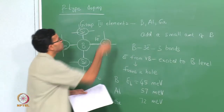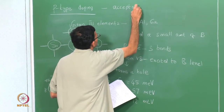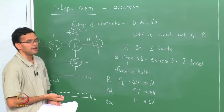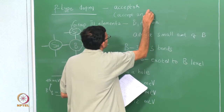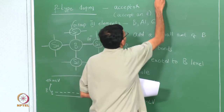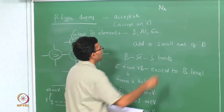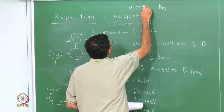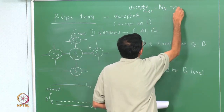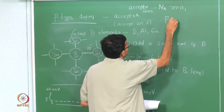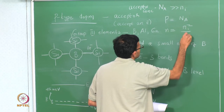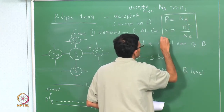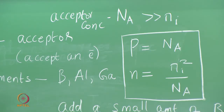A P-type dopant is called an acceptor. An N-type dopant is called a donor because it donates one electron; a P-type dopant accepts one electron. If Na is the concentration of acceptor atoms and Na is much greater than Ni, then p equals Na and n equals Ni squared over Na.